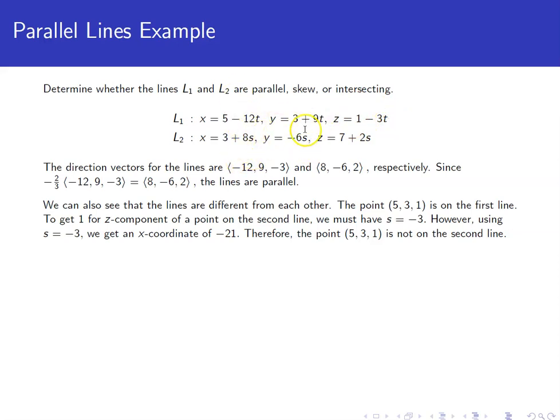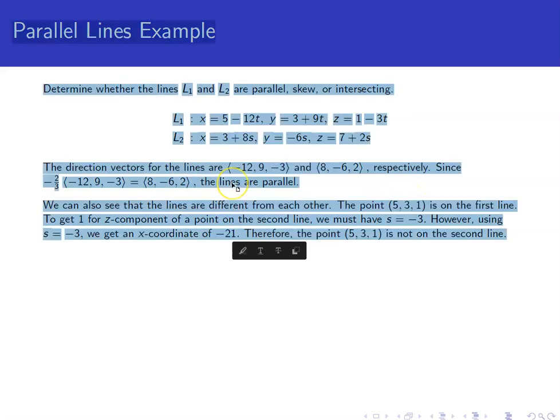For the second line, it would be 8, negative 6, and positive 2. We can check pretty quickly that if we take negative 2 thirds times the first one, we get the second one. Since the two direction vectors are scalar multiples of each other, we can conclude that the direction vectors are parallel.